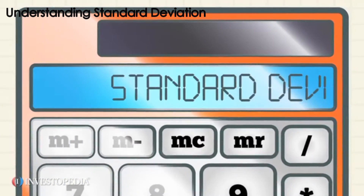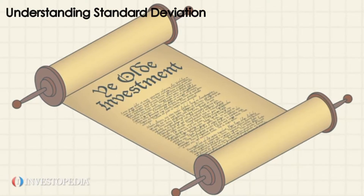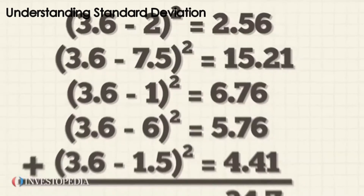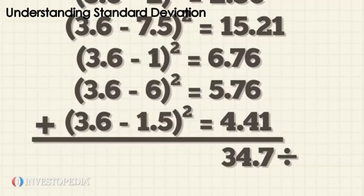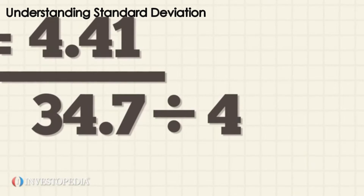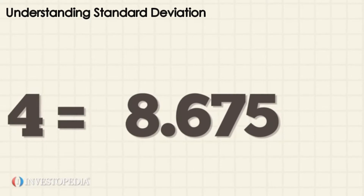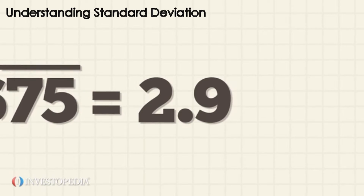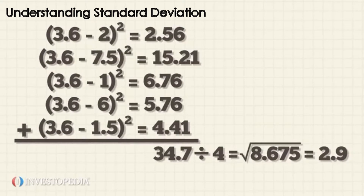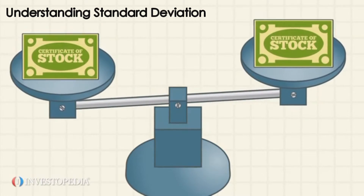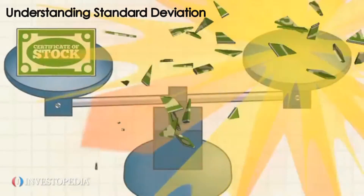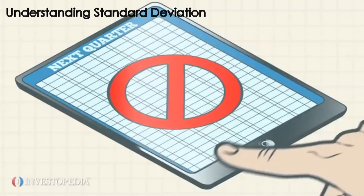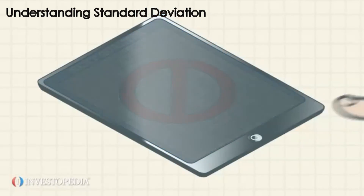To find the standard deviation, find the average historical return — which is 3.6% — then subtract the returns from each month, square them, and find the sum. Next divide that sum by the number of observations minus one, in this case four, leaving a result of 8.675. Taking the square root gives a standard deviation of 2.9. This is particularly helpful when comparing similar investments in the same asset class. Note that past volatility doesn't perfectly predict future returns — a stock that has been consistent for years may suddenly experience sharp fluctuations.